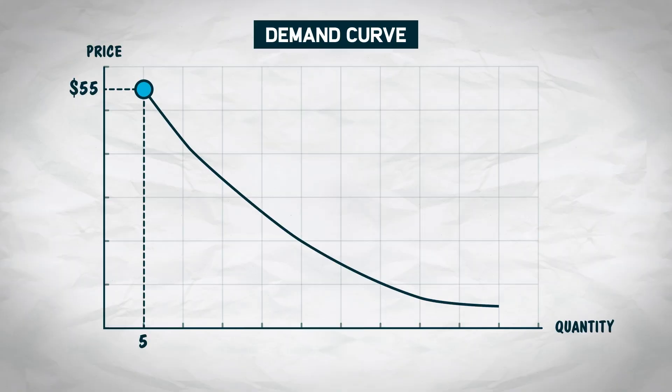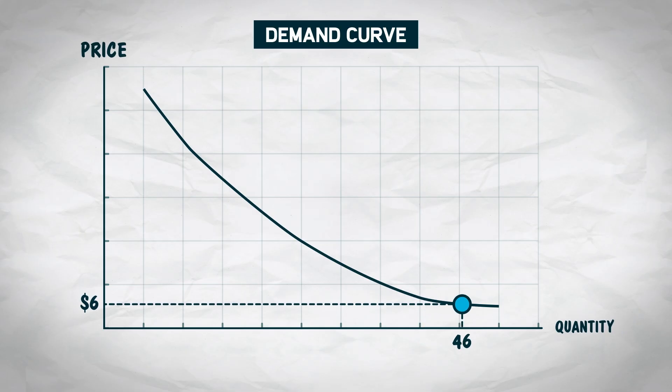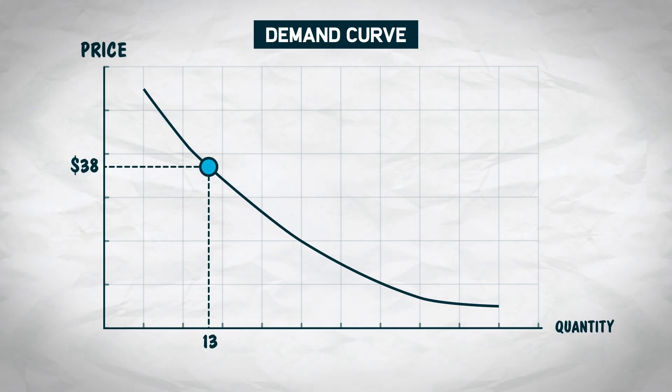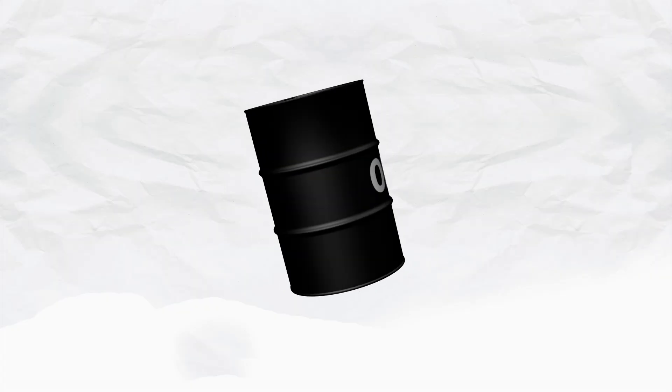In this video, we're going to dive deeper into the demand curve by building one together and then learning two different ways to read a demand curve. So let's start with the definition: a demand curve is a function that shows the quantity demanded at different market prices. Let's take an example of the market for oil and then build a demand curve together.